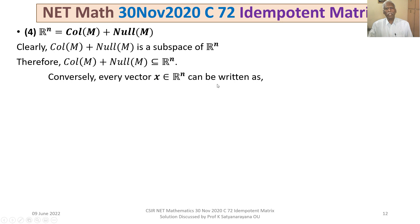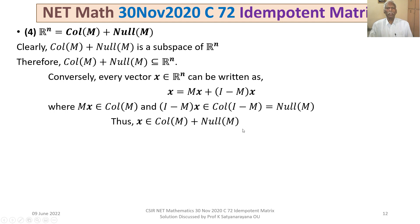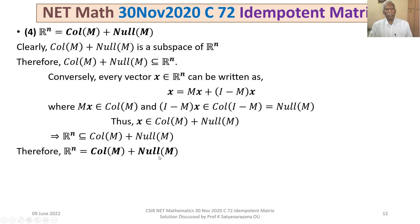Conversely, every x ∈ ℝⁿ can be written as x = Mx + (I − M)x. Here Mx belongs to the column space of M, and (I − M)x belongs to the column space of (I − M), which we proved equals the null space of M. Therefore x ∈ col(M) + null(M), so ℝⁿ ⊆ col(M) + null(M). Combining, ℝⁿ = col(M) + null(M), and Option 4 is true.